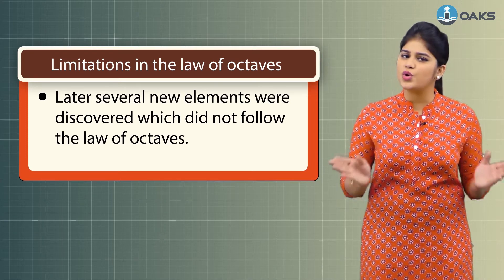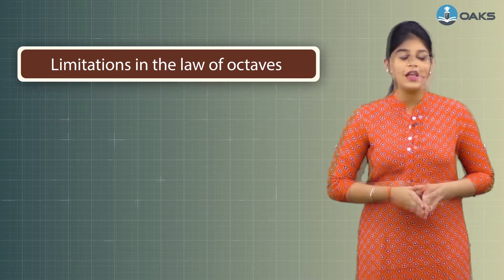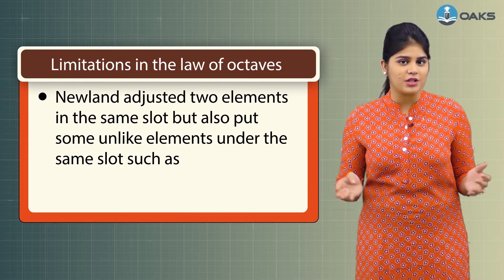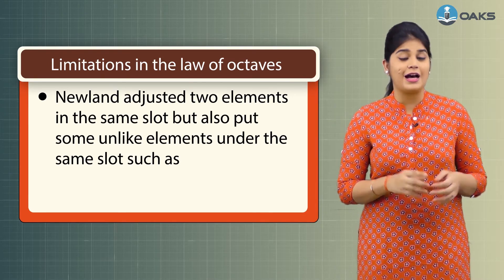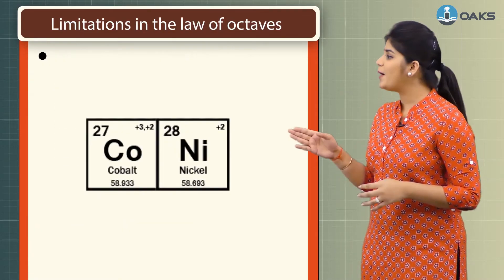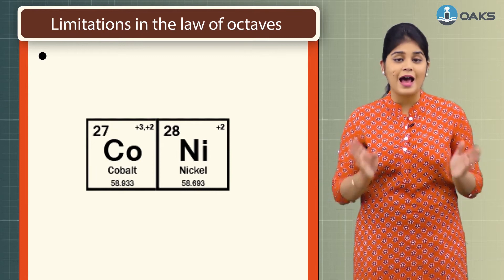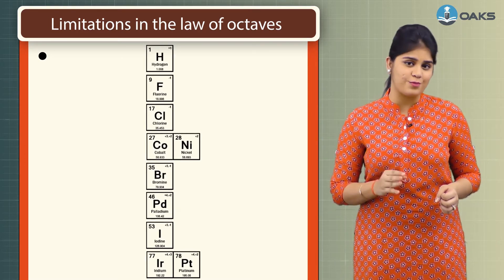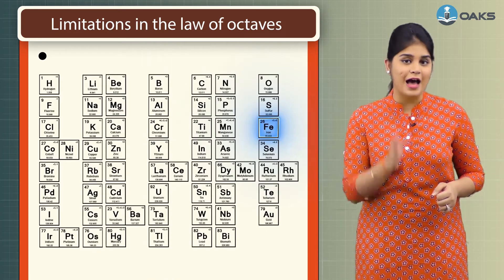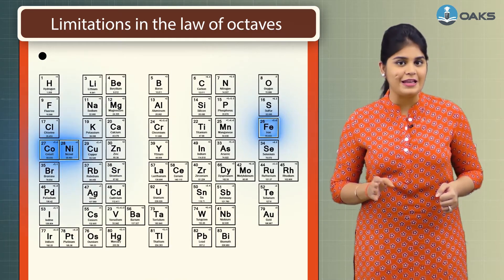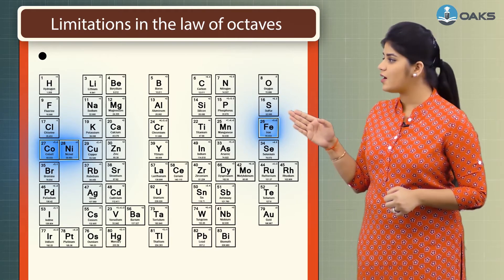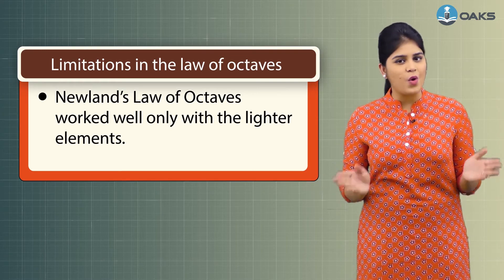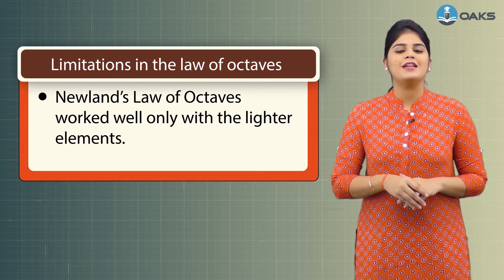Later, several new elements were discovered which did not follow the Law of Octaves. In order to fit elements into his table, Newlands adjusted two elements in the same slot, and put some unlike elements together — for example, cobalt and nickel were placed in the same column as fluorine, chlorine, and bromine, which have very different properties. Iron, which resembles cobalt and nickel in properties, was placed far away from them. The Law of Octaves worked well only with lighter elements.